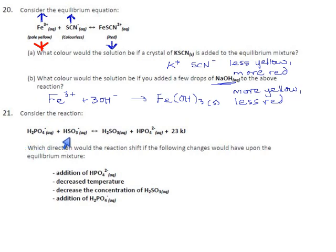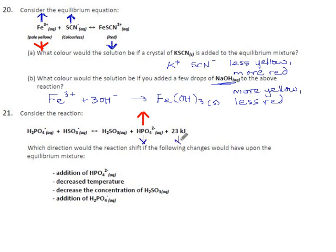Dihydrogen phosphate meets sulfurous acid, and we get hydrogen sulfite, sulfurous acid, hydrogen phosphate, and some heat. If we add HPO₄²⁻ — which is on the right side — the system will want to consume it, so that side goes down. Everything on that side will go down and everything on the other side will go up. It's always either left down, right up, or left up, right down — you pick the one that opposes the stress. So the reaction goes to the left.